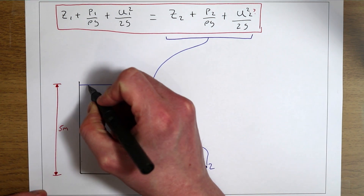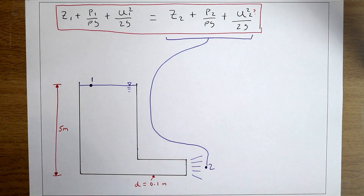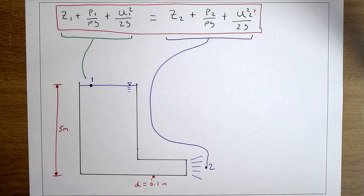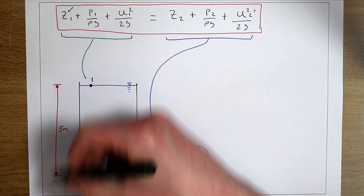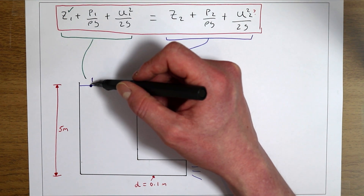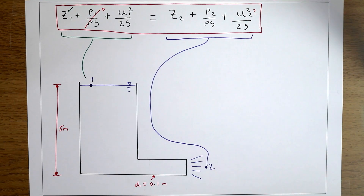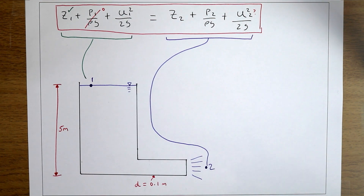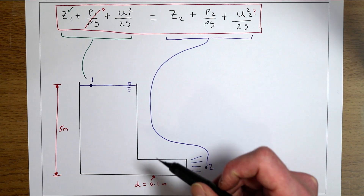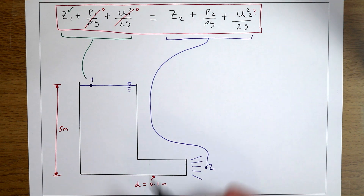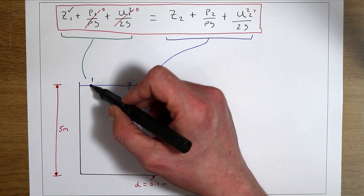We take point one as the water surface in the tank. At the water surface we know the elevation is five meters. The pressure is zero because there's no water above this particle so it's not under any pressure. We can also assume the velocity at the water surface is negligible and call it zero, because in a large tank the speed of the surface is negligible compared to the speed in the pipe. So at the water surface, all of the energy is potential energy in elevation.